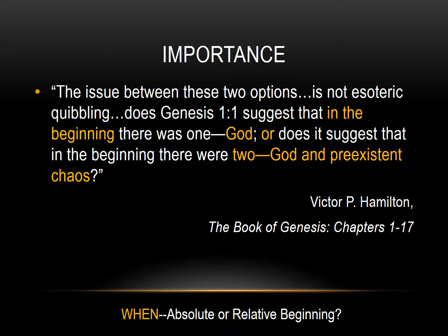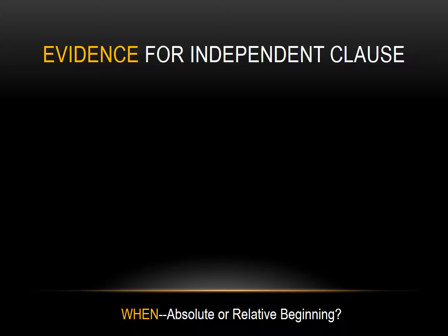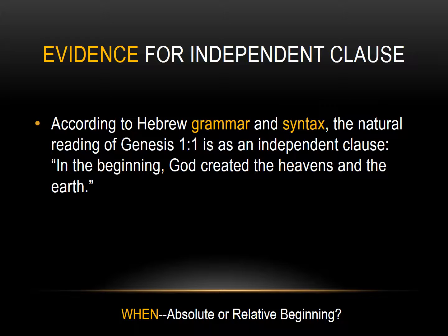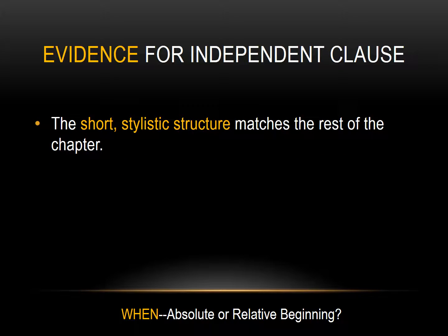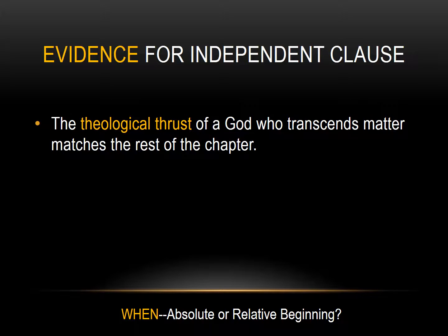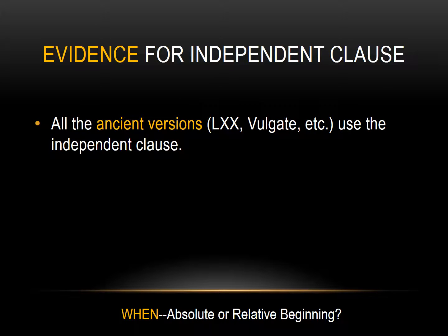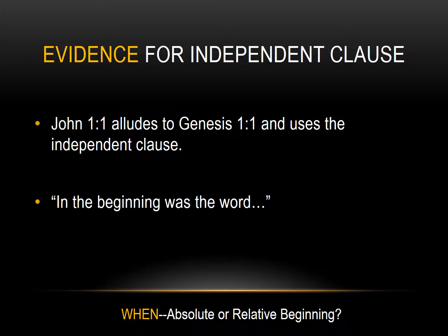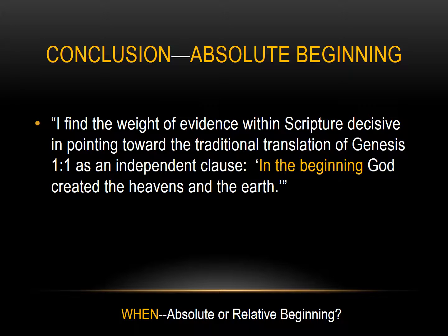The importance of this question boils down to this: does Genesis 1:1 suggest that in the beginning there was just God, or that in the beginning there was something else there with God? The author prefers the standard translation. According to Hebrew grammar and syntax, the natural reading of Genesis 1:1 is as an independent clause. The short stylistic structure matches the rest of the chapter. All the ancient versions use the independent clause. John 1:1 alludes to Genesis 1:1 and uses the independent clause: 'In the beginning was the Word.' The author concludes that Genesis 1:1 describes an absolute beginning.